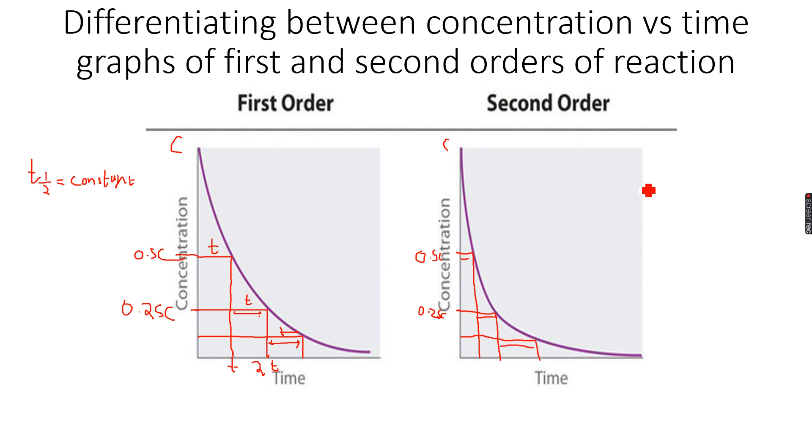So for second order reactions, the half-life is not constant. So t half is not constant.